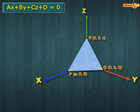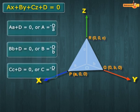Therefore, by using coordinates of points P, Q, R and the equation of the plane, we get the following values.